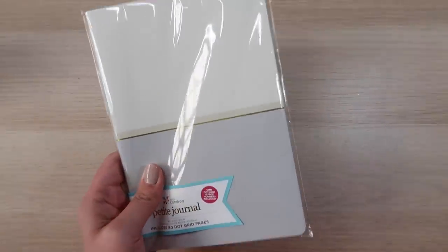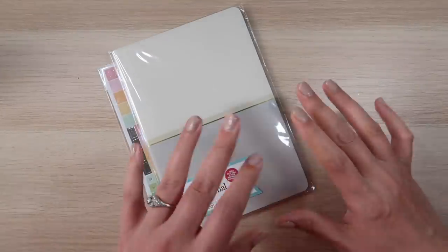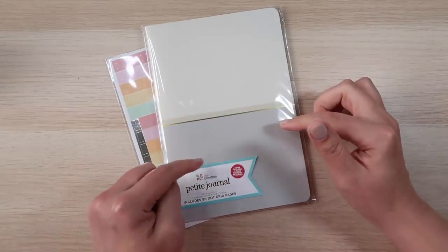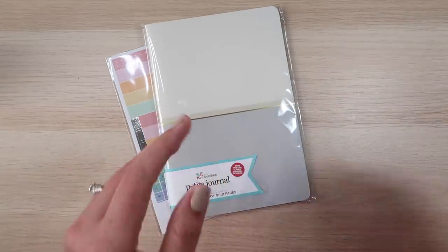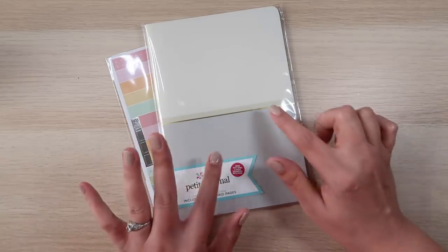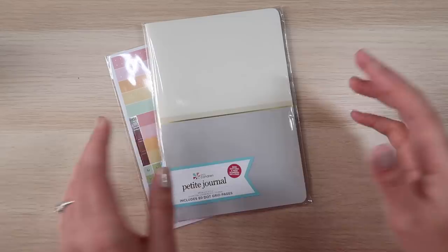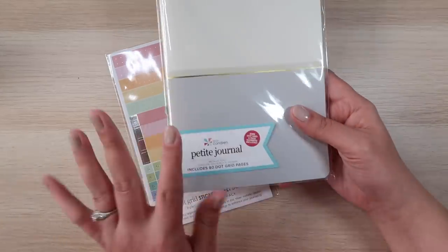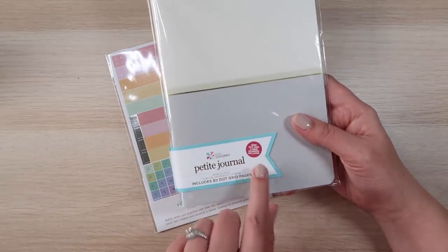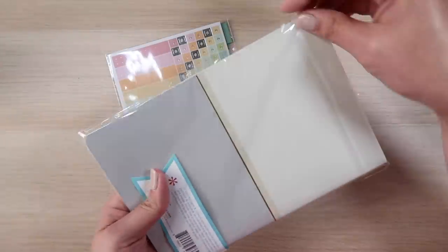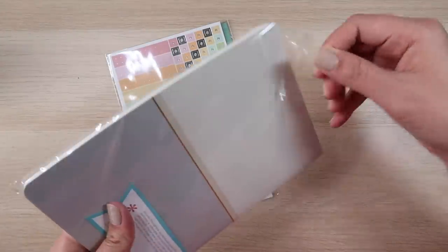This has 80 dot grid pages. There are two different styles of these. This is the charcoal color block and then there's also a turquoise color block. And you can choose if you want to to personalize it with foil with your initials, just your initials. I didn't do that because I wasn't sure if I was going to keep it or not. Now they tell you up front that the dot grid is 5 millimeter and that there are page numbers. So I haven't even opened this yet. So let's take a look.